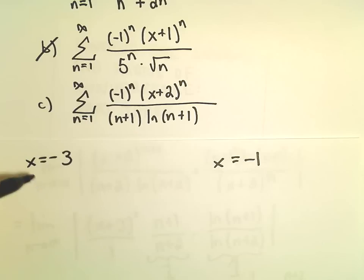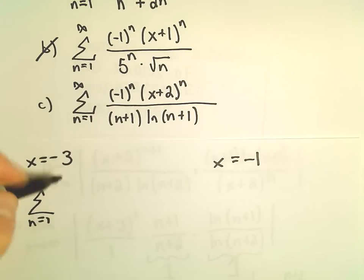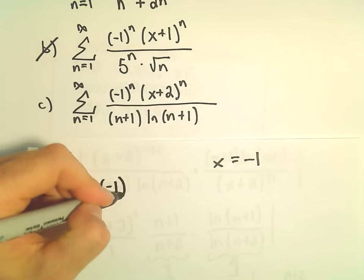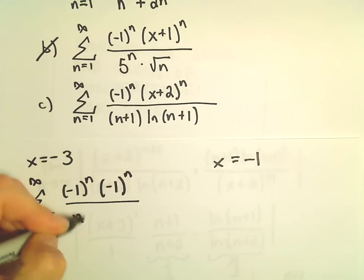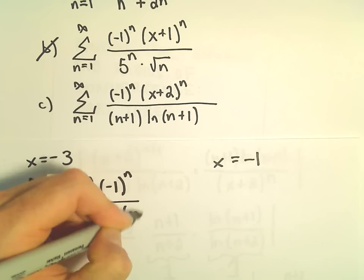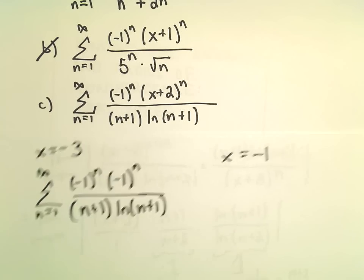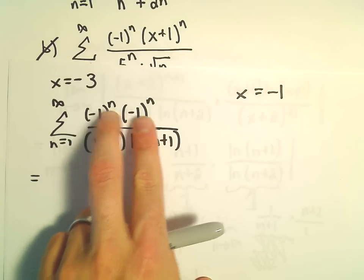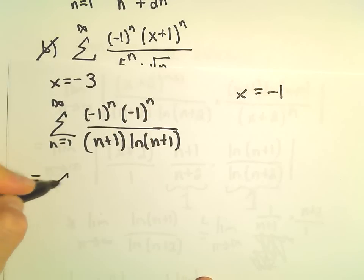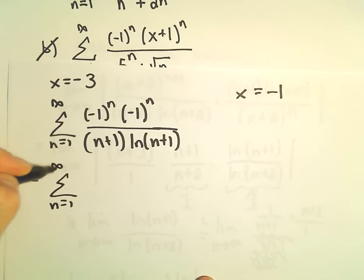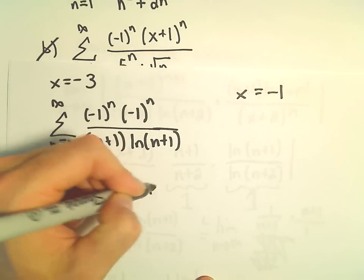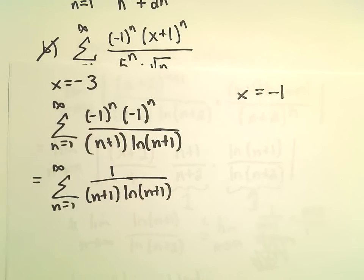Checking the endpoints: if we plug in x equals negative 3, we get the series from n equals 1 to infinity of negative 1 to the n times another negative 1 to the n, all over n plus 1 times the natural logarithm of n plus 1. Negative 1 to the n times negative 1 to the n gives positive 1 to the n, so we're left with the series of 1 over (n plus 1) times the natural logarithm of n plus 1.